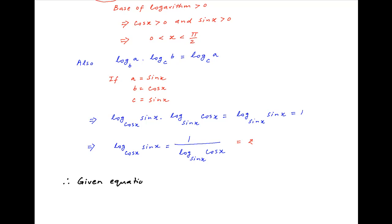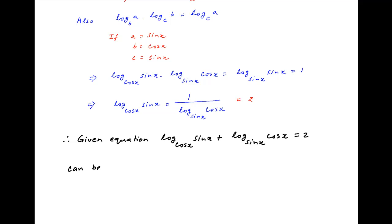Now we go back to the given equation which is log of sin x to the base cos x plus log of cos x to the base sin x is equal to 2. Replacing log of sin x to the base cos x with z and log of cos x to the base sin x with 1 upon z as derived above, this equation becomes z plus 1 upon z is equal to 2.